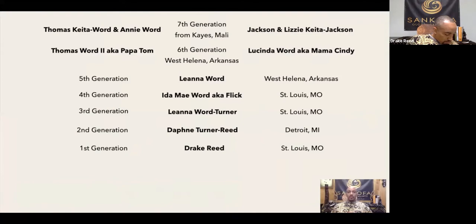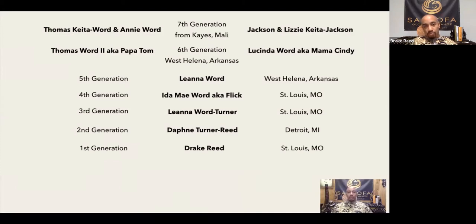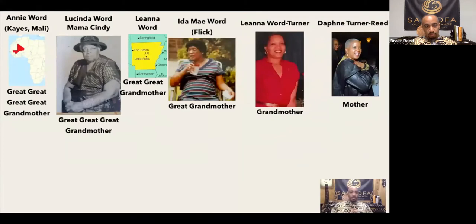Using the systems at Sankofa Global Exchange, we've tracked our family back seven generations. The first Malians to come to the United States in our family were Thomas Keita Word, Annie Word, and also Jackson and Lizzie Keita Jackson. Those families had Thomas and Lucinda Word. Thomas and Lucinda Word had Leanna Word. Leanna Word begat Ada May Word. Ada May Word begat Leanna Word Turner, then Daphne Turner-Reed — who was my mother — and I am Drake Reed. To lay it all out on paper, the DNA goes from Annie Word to Lucinda Word to Leanna Word to Ada May Word to Leanna Word Turner to Daphne Turner-Reed.